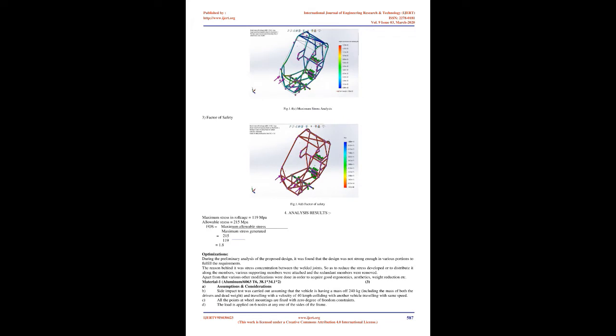4.1 Frontal Impact Analysis — Material: Aluminium 6063-T6, 38.1 × 34.1 × 2 mm. Assumptions: The front impact test was carried out assuming the vehicle has a mass of 240 kg including the mass of both drivers and dead weight, traveling at 40 km/h and colliding head-on with a stationary wall. All points at wheel mountings are fixed with zero degrees of freedom. The load is applied at the front four nodes. Mesh is beam mesh with fine density. As per NHTSA, minimum impact time is of the order of 250 ms.